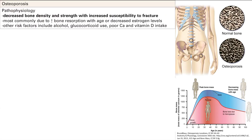The next pathology is osteoporosis. What is going wrong here is decreased bone density and strength, leading to increased susceptibility to fracture. This is most commonly due to increased bone resorption with age or decreased estrogen levels, hence why older women are most susceptible. Estrogen basically helps osteoblasts live and helps osteoclasts die, so if you lose estrogen, you get poor bone formation.